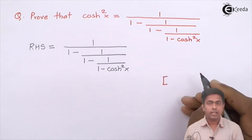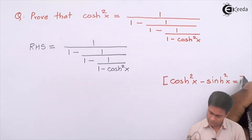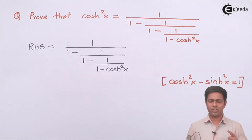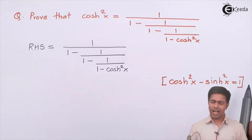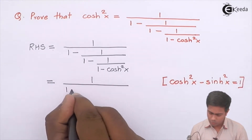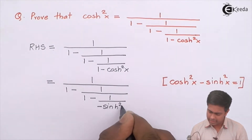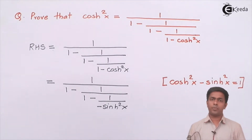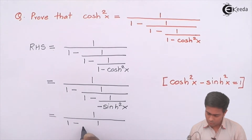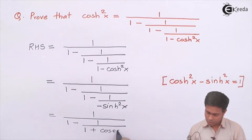The formula we use here is: hyperbolic cos square x minus hyperbolic sin square x equals 1. So, what is 1 minus hyperbolic cos square x? If we rearrange, the answer is negative hyperbolic sin square x. Substituting that value in, we get 1 upon 1 minus 1 upon 1 minus 1 upon negative hyperbolic sin square x. Now, 1 upon hyperbolic sin is hyperbolic cosec, and with negative and negative giving positive, this becomes 1 upon 1 minus 1 upon 1 plus hyperbolic cosec square x.